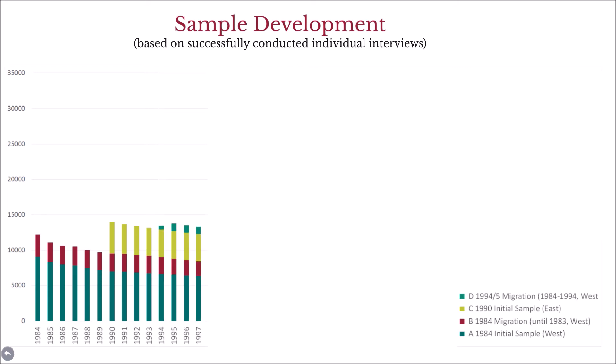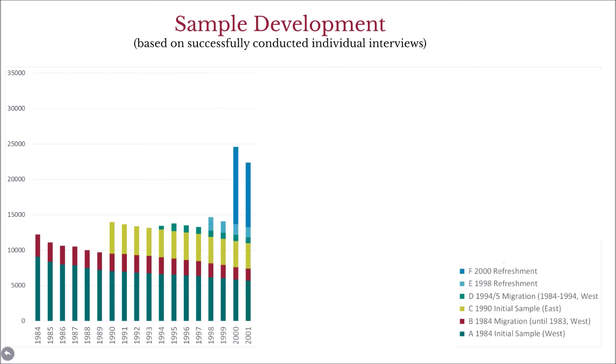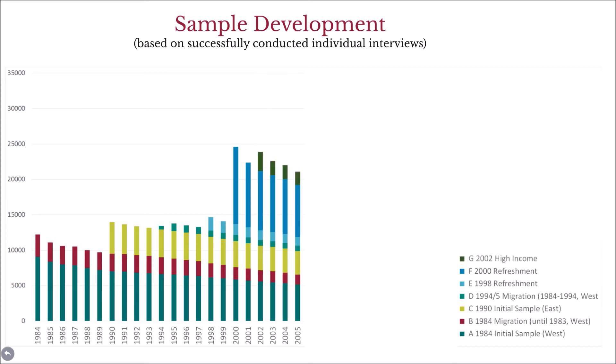In 1994, another migration sample was added, covering migrants who had come to Germany over the previous 10 years in which the survey had been running. To correct for panel attrition and to increase the total sample size, two refresher samples were added in 1998 and in 2000. In an attempt to better represent the upper end of the income distribution, a high-income sample was added in 2002.